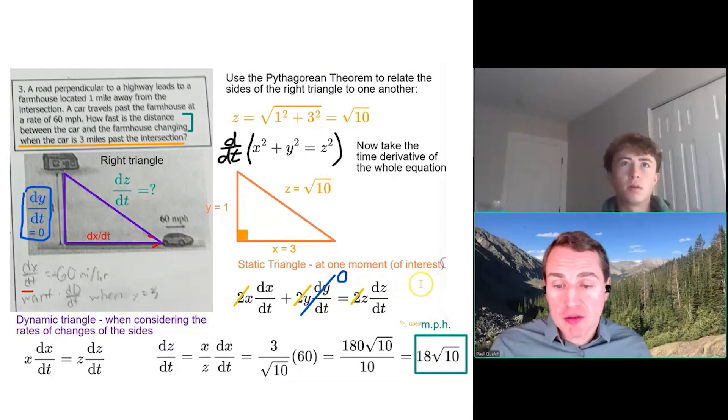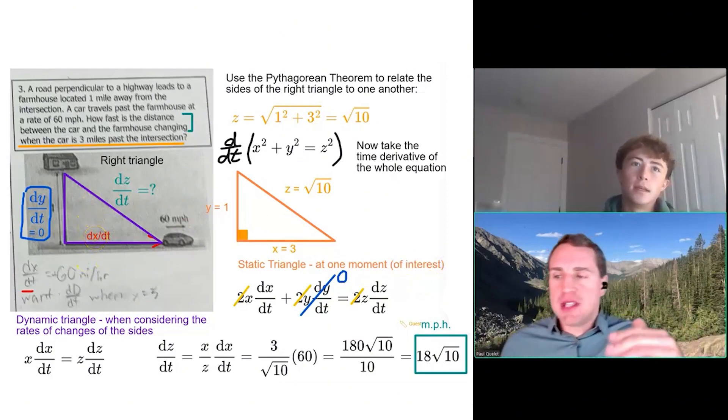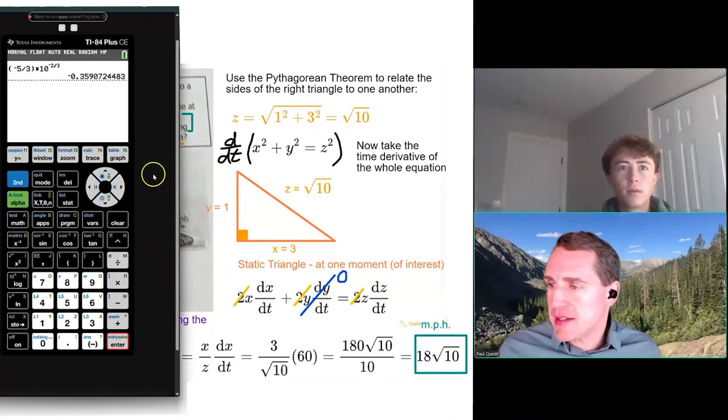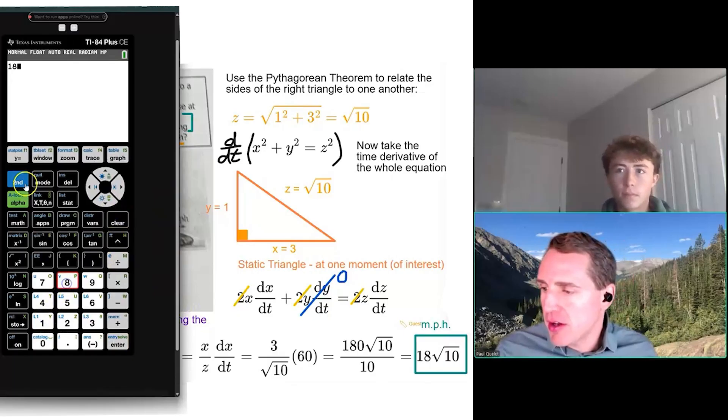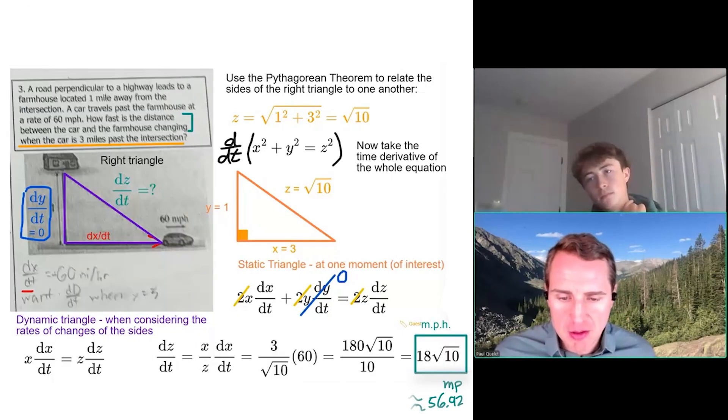It could be miles per hour, right? Because the miles per hour was dx/dt. Miles was the distance, and we have to assume the time is in hours. Now, of course, one last thing, you could just get an approximate in your calculator. That's about 56.92 miles per hour, okay?